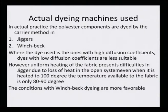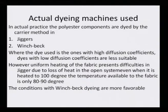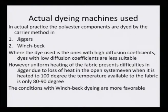Uniform heating of the fabric presents difficulties in the Jigger due to loss of heat in the open system. Even when it is heated to 100 degrees, the temperature available to the fabric is only between 80 to 90 degrees, and polyester requires high heating. Therefore, Jigger is not one of the best machines. Of course, if one has only a Jigger in the dye house, it is possible to do polyester dyeing in it. The conditions with Winch dyeing are much more favorable compared to the Jigger.